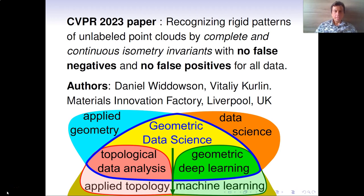Hello, I'm Vitaly Kurlin and will present the joint work with my PhD student Daniel Widowson. Our paper substantially contributes to a new area of geometric data science by developing isometry invariants with no false negatives and no false positives.